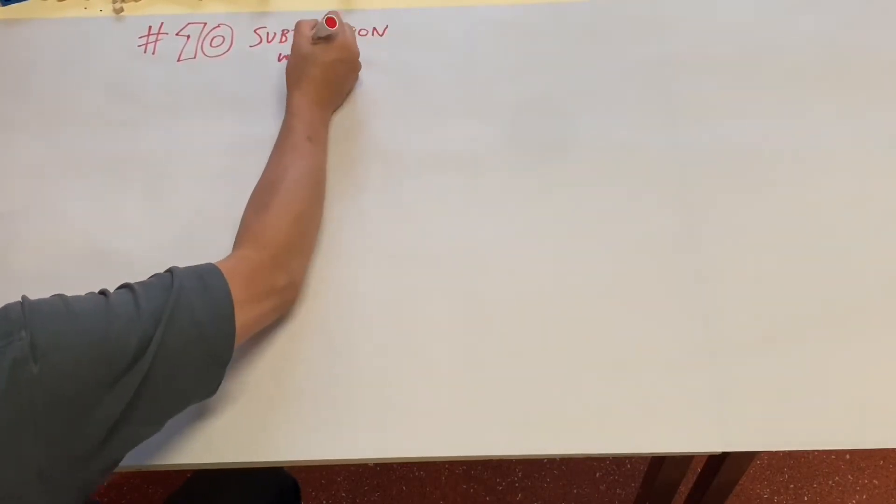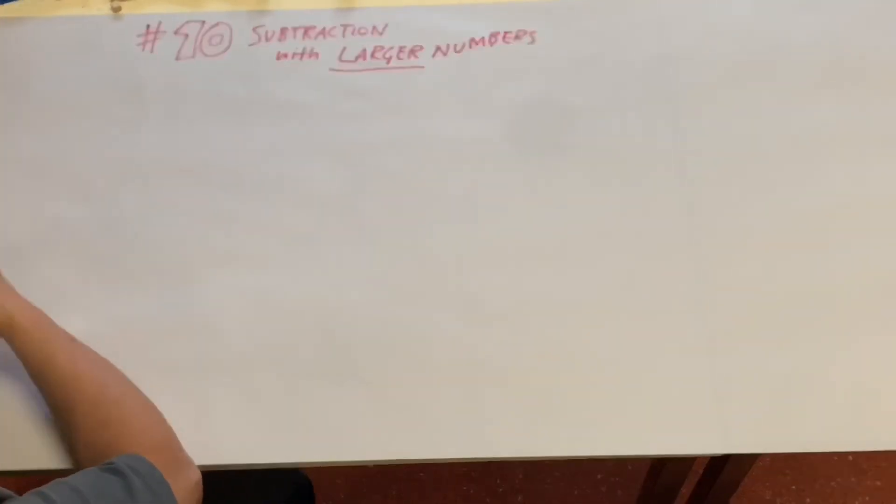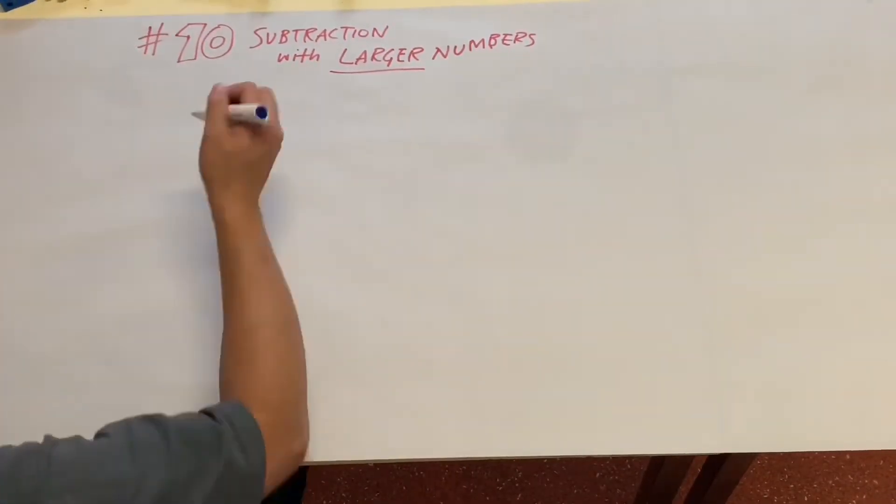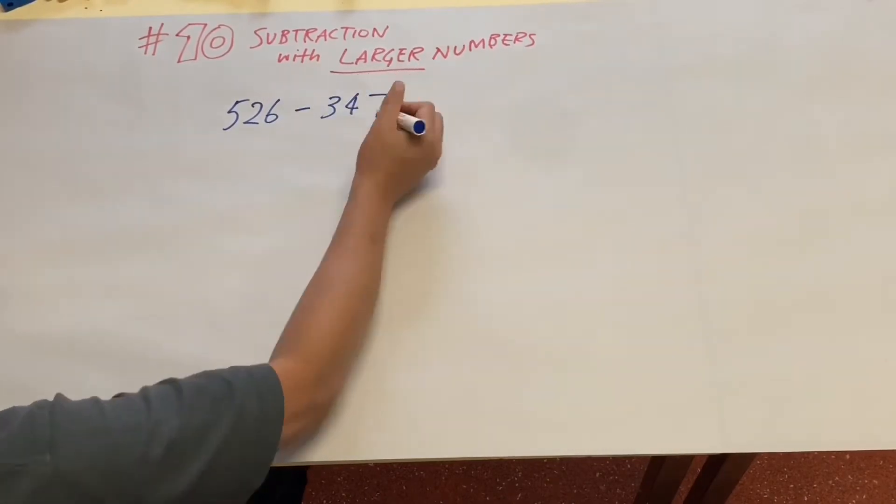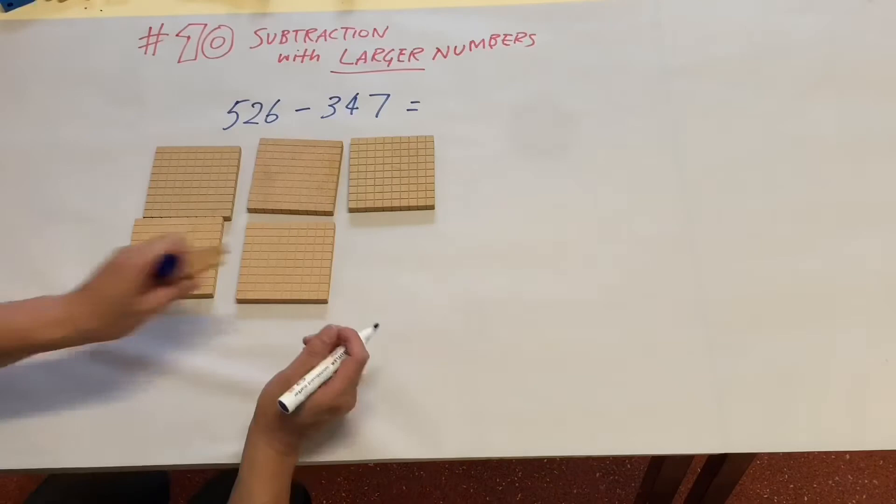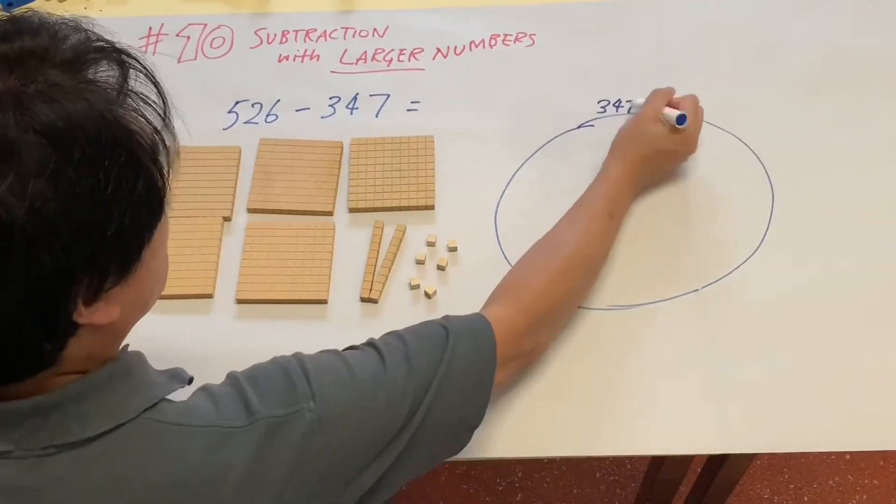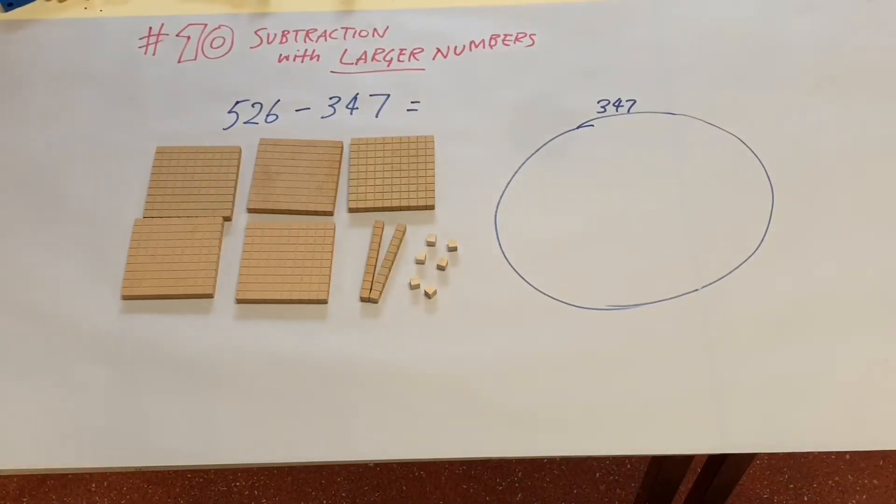Number 10 is subtraction again, this case with larger numbers. So 526 take away 347. If students need to use the concrete materials, please let them use the base 10 blocks.